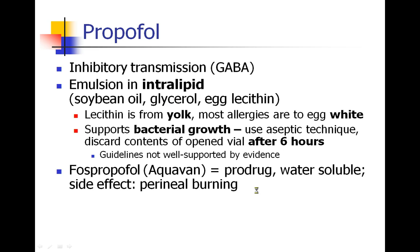The second IV drug we're going to speak about is propofol — a drug you've all given in the operating room many times already. Propofol works primarily at GABA receptors, increasing activity at this inhibitory pathway. Propofol is prepared as an emulsion in intralipid, a white substance made out of soybean oil, glycerol, and egg lecithin. Because propofol is not water-soluble, it is emulsified in this substance — that's why propofol is white.